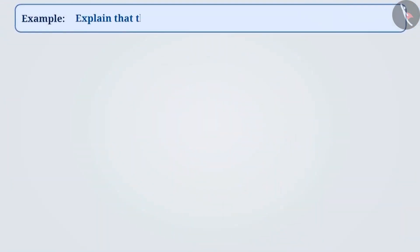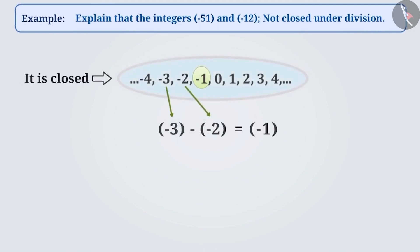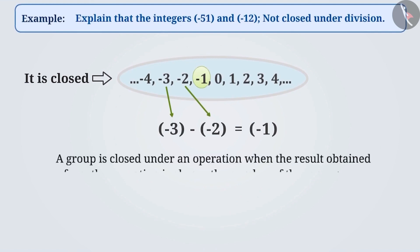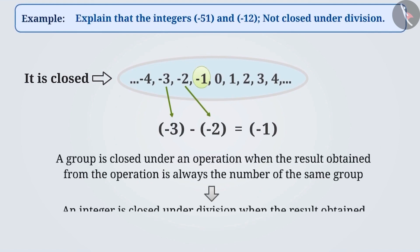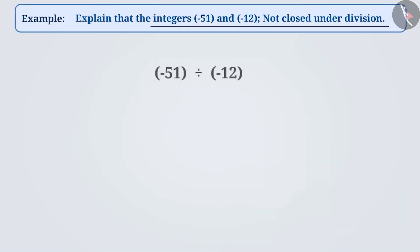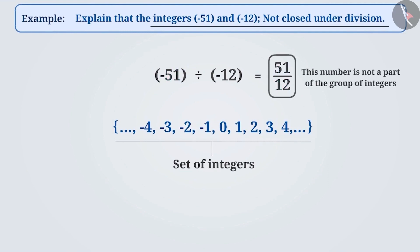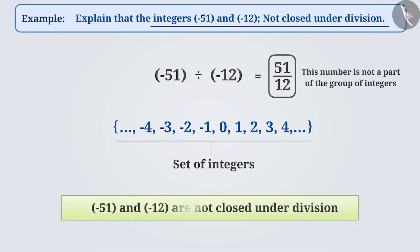Next example: explain that the integers minus 51 and minus 12 are not closed under division. A group is closed under an operation when the result obtained from the operation is always a number of the same group. Therefore, an integer is closed under division when the result obtained from the division is always a number of the same group. To clarify that division is not closed, we will find the result of minus 51 divided by minus 12. This results in 51/12, which is not a part of the group of integers. Since the result obtained by division of integers is not part of the same group, minus 51 and minus 12 are not closed under division.